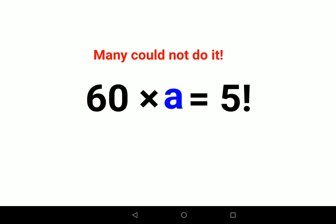Keep this as it is: 60 × a and 5 factorial. Whenever you have a factorial sign, an exclamation sign ahead of a number, you need to find the factorial.